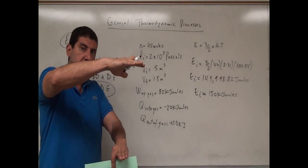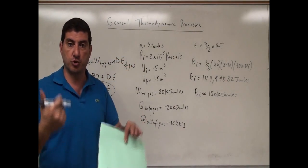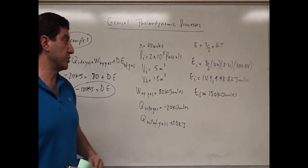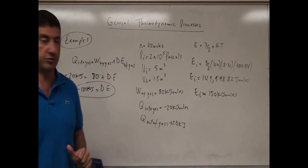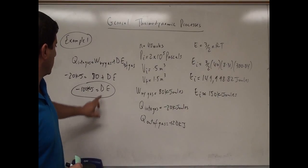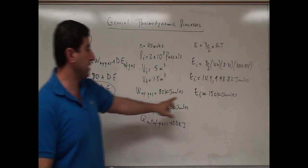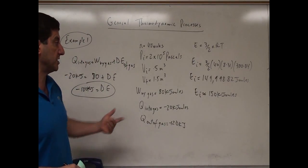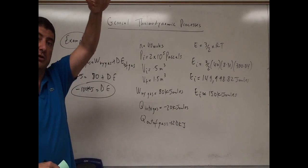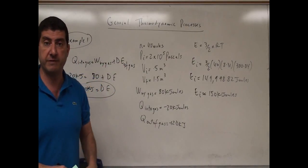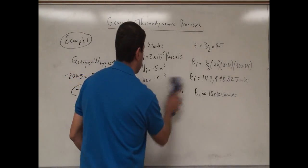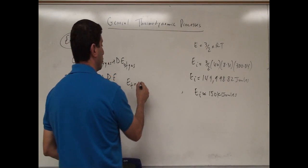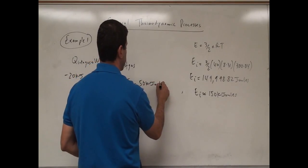Because the gas is expanding, that already tends to make its temperature go down, and heat is also escaping, which further reduces the temperature. The change in internal energy is negative 100 kilojoules, and the initial internal energy was 150 kilojoules, so the final internal energy is 150 minus 100 = 50 kilojoules.